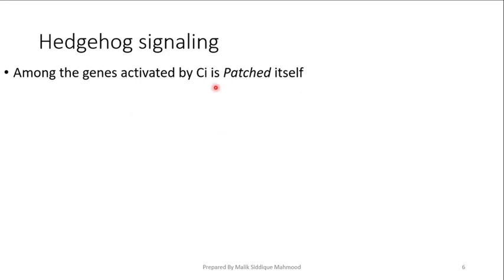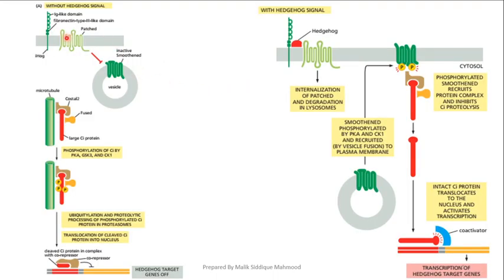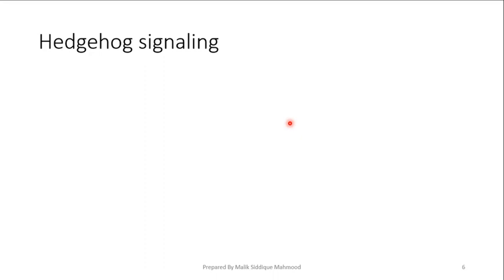The CI protein will activate genes. The transcription will initiate Patched itself. If the Patched protein is produced much more in the cells, then obviously it will block the Smoothened protein and ultimately block the whole pathway. Actually, the Patched protein is a negative feedback mechanism. The Patched protein will block Hedgehog signaling.